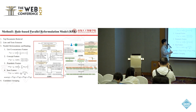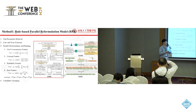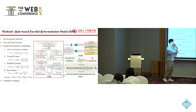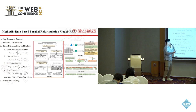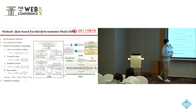Then we do the parallel reformulation and ranking. Specifically, we replace each term in the user query with all the extracted list items so as to obtain all possible exploratory queries, and then we design various features to rank all these exploratory queries. In the final step, we do the candidate grouping — we divide all these candidates into different groups based on their replaced terms, such as 'Cartier,' 'women,' or 'watches,' and we keep at most five candidates in each group.